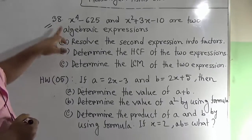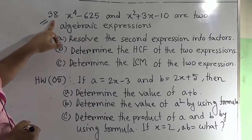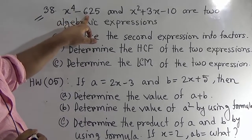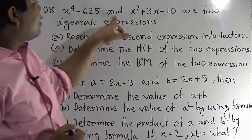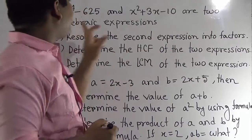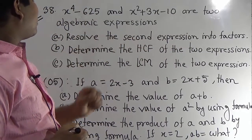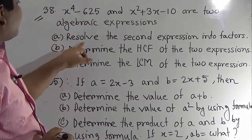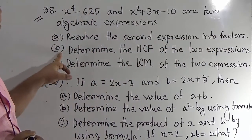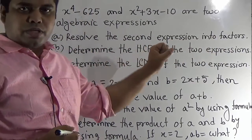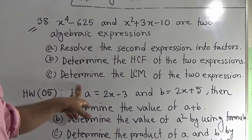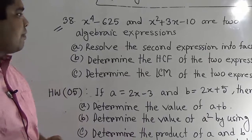Our first question is question 39. Here, x to the power 4 minus 625 and x squared plus 3x minus 10 are two algebraic expressions. Number A: resolve the second expression into factors. Number B: determine the HCF of the two expressions. Number C: determine the LCM of the two expressions.